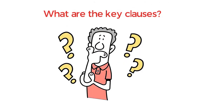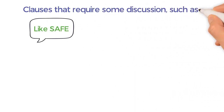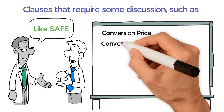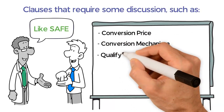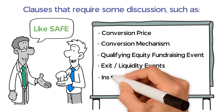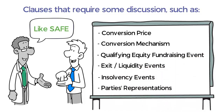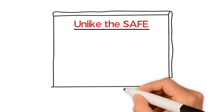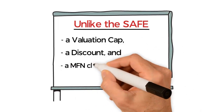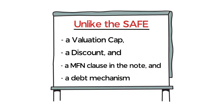What are the key clauses? Like safe, the KISS only has a limited number of clauses that require some discussion, such as conversion price, conversion mechanism, qualifying equity fundraising event, exit or liquidity events, insolvency events, and parties representations. However, unlike the safe, there is typically a valuation cap, a discount, and an MFN clause in the note, and a debt mechanism depending on the type of KISS note.